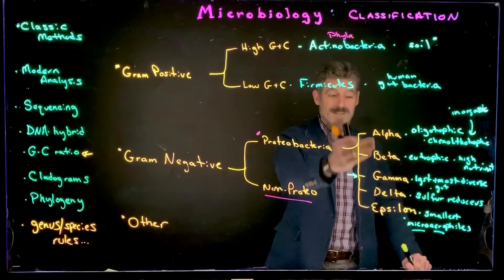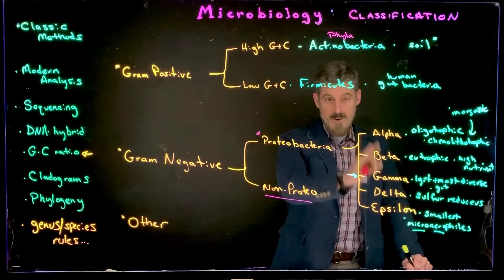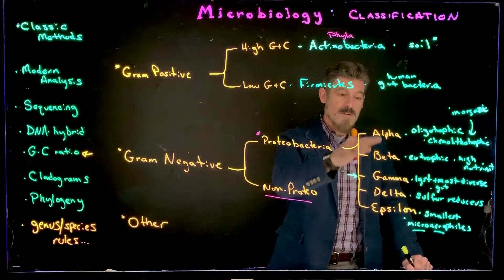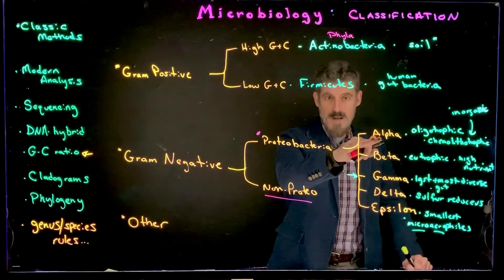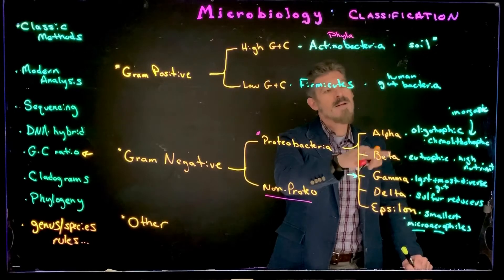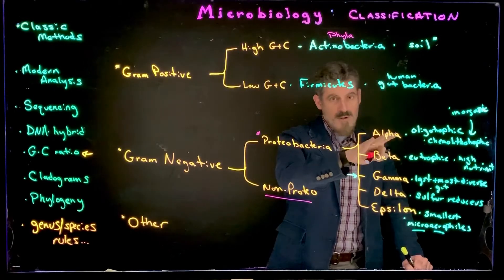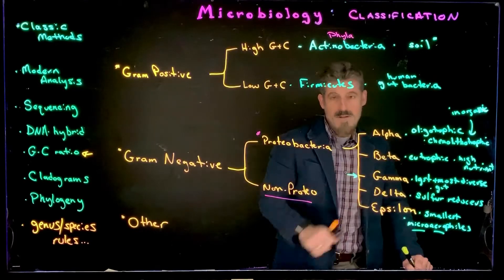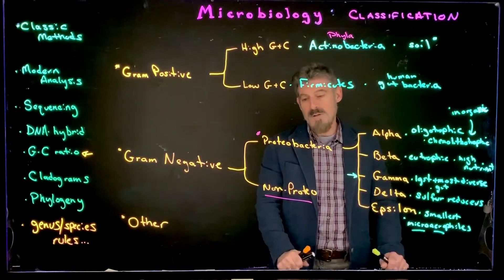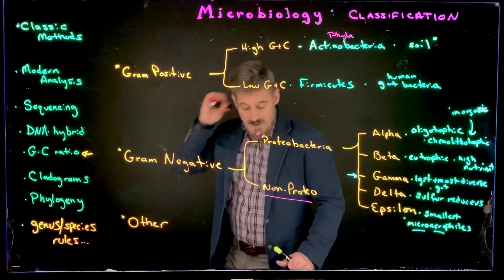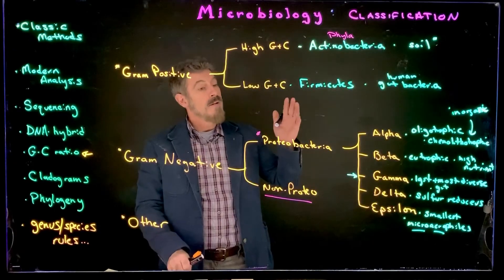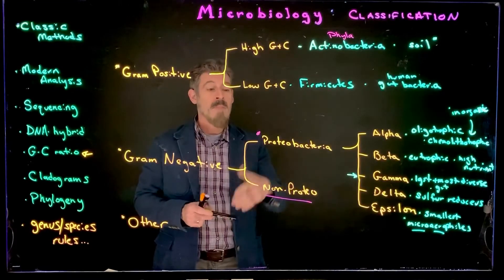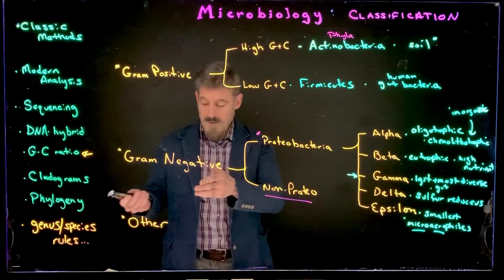So all of these are gram-negative bacteria, could be rods or cocci. These are the actual names of the groups — alpha, beta, gamma, delta, epsilon proteobacteria — and the general characteristics tend to apply to the majority of members. Whatever gram-negative bacteria are not proteobacteria fall into another category.